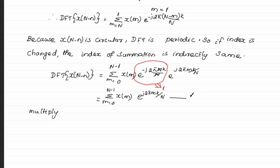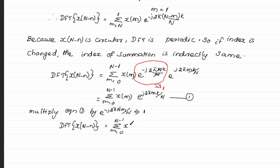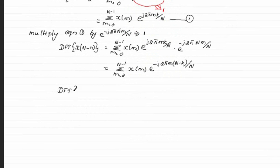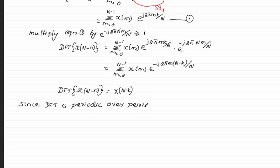So we can rewrite that equation, and the e-power term now contains only the k term. To bring it to the format of X(N-k), we multiply by e to the power minus j 2π N·m/N, which is actually equal to 1 so it does not change the meaning of the equation. Combining the two e-power terms, we get X(N-k). Since the DFT is periodic over period N, X(N-k) is equivalent to folding X(k).